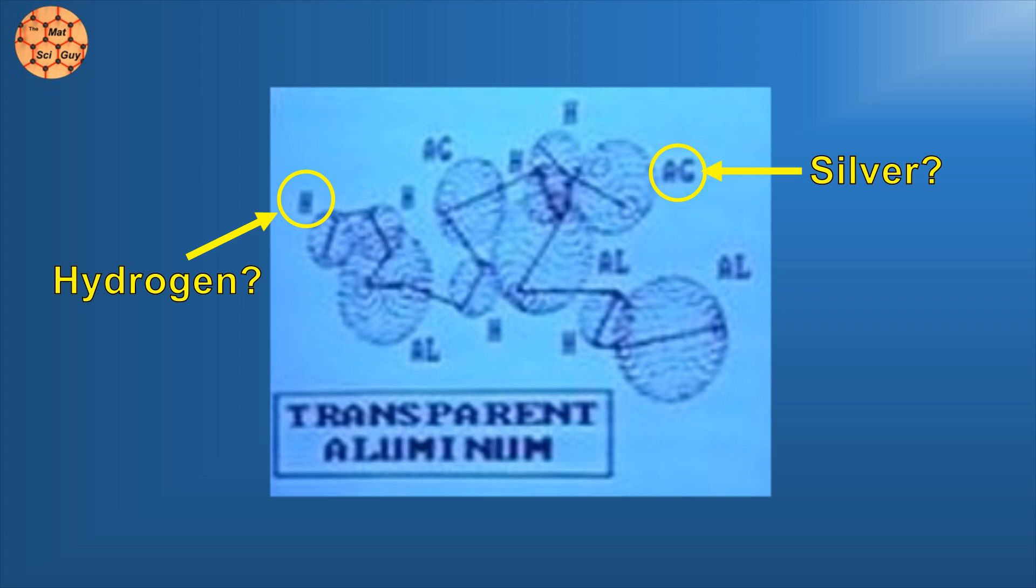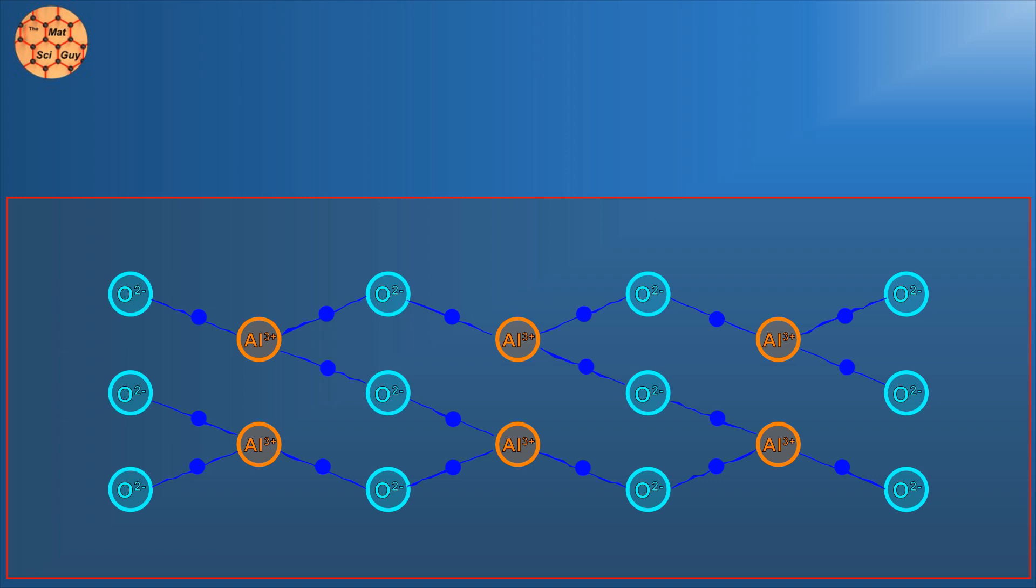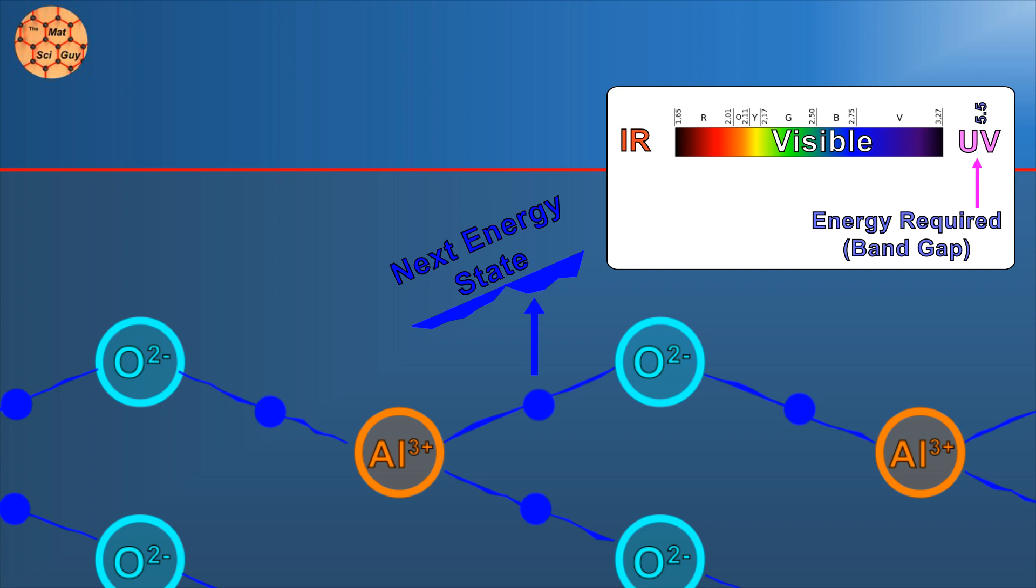Anyway, since the aluminum atoms in alumina share their outermost electrons with the oxygen atoms to form this bond, we no longer have free electrons running around in the material. At an atomic level, light doesn't interact much with alumina. The bonding is so strong that the energy required to make these electrons jump to the next available energy level is deep into the UV range, so our photon can sneak through without disturbing them.